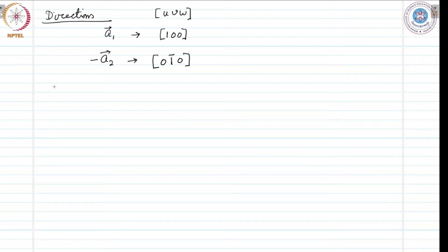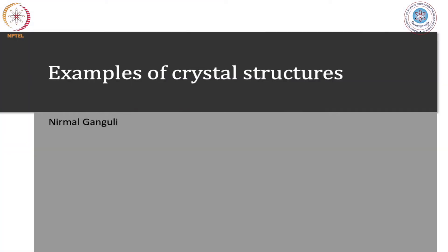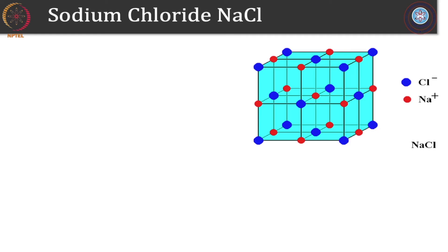There are few crystal structures that are not of a fundamental type. The fundamental types of crystal structures we have already discussed in terms of Bravais lattices. There are certain crystal structures that are not fundamental but are very important for our clear understanding of crystal structures and the structure of solids. Now we will discuss some examples of crystal structure.